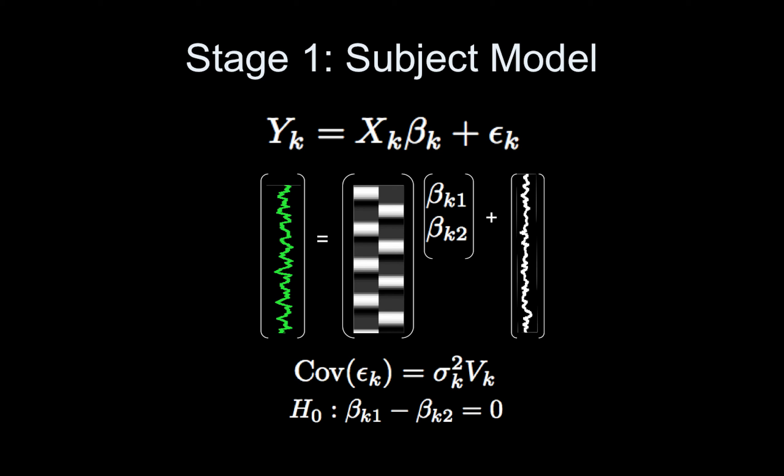Last time we looked at this two-stage model where in the first stage we're modeling the fMRI time series. This is a BOLD time series tipped on its side, and this is a design matrix for a block design study. The important bits at the first level are this contrast we estimate—in this case it's faces minus houses—and the within-subject variance has this somewhat complicated structure of a within-subject variance squared term times a correlation matrix.